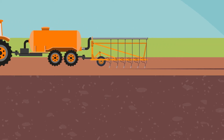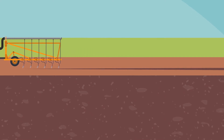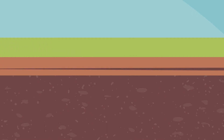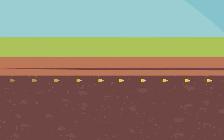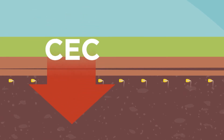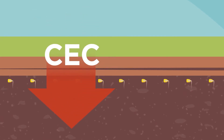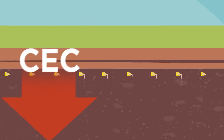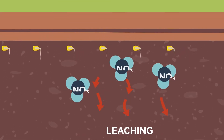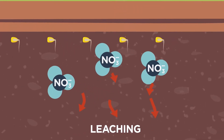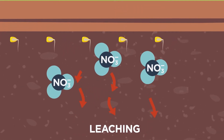If you over-apply synthetic nitrogen above your soil's ability to hold it for the crop, you're increasing your risk of nitrogen loss. This is especially true with soils that have a lower CEC, as they are more susceptible to loss through the soil profile, particularly during weather events.